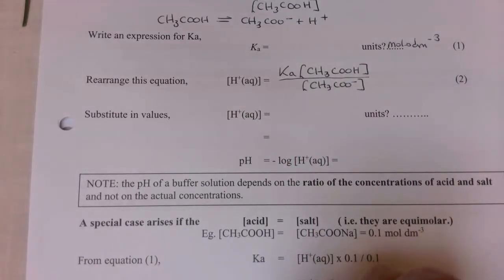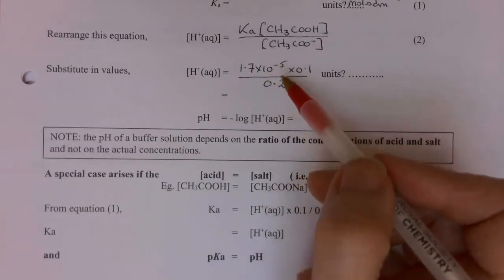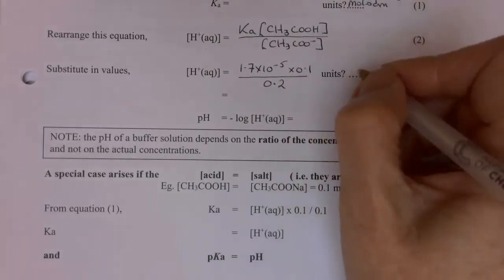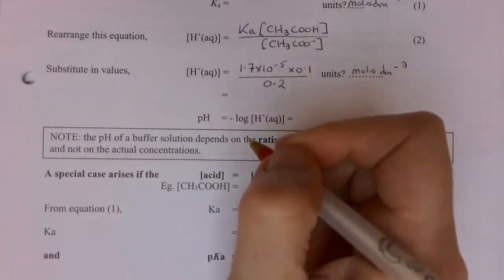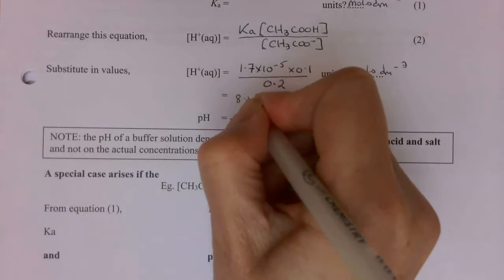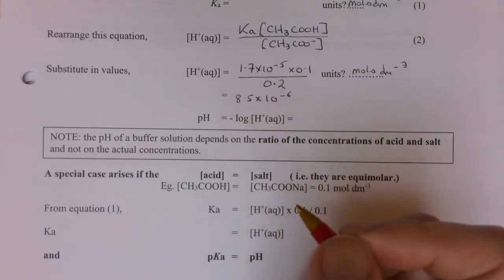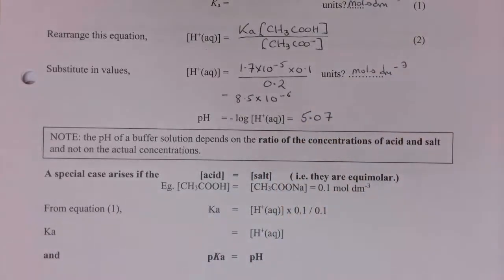Putting the values in: the Ka for a buffer is exactly the same as the Ka for the weak acid, so I find it in the data book and multiply by the concentration of the acid divided by the concentration of the salt — units are mol dm⁻³. Putting that into the calculator gives 8.5 × 10⁻⁶. Taking −log₁₀ of that gives a pH of 5.07. So I've made a buffer with a pH of 5.07.